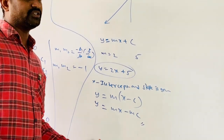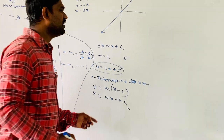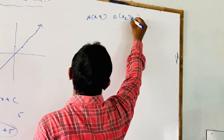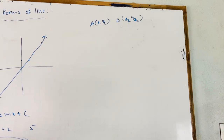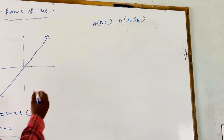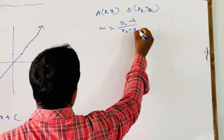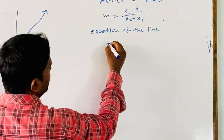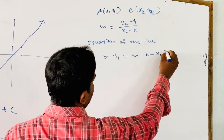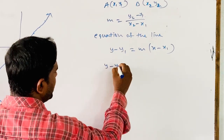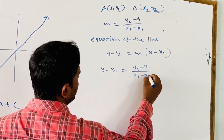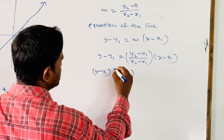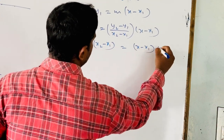If a line passes through two points A(x₁, y₁) and B(x₂, y₂), the slope is m = (y2 − y1) / (x2 − x1). The equation of the line is y − y₁ = m(x − x₁). Substituting m, we get y − y₁ = [(y2 − y1)/(x2 − x1)] × (x − x₁), or equivalently (y − y₁)(x₂ − x₁) = (x − x₁)(y₂ − y₁).